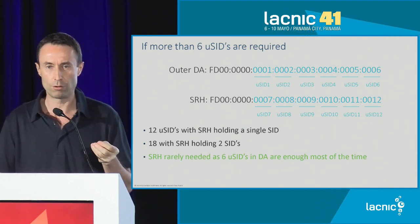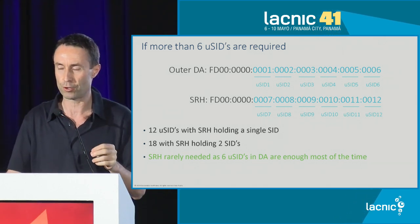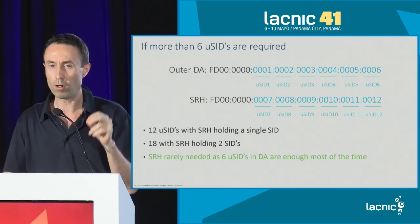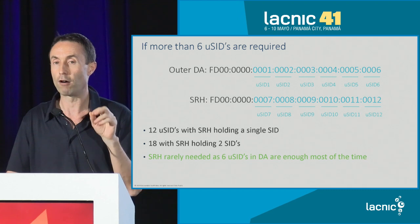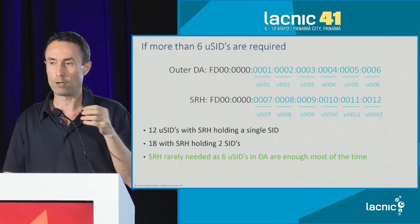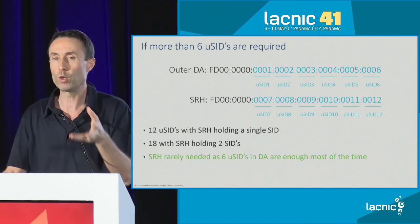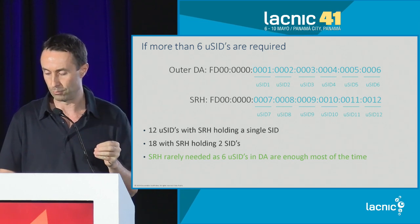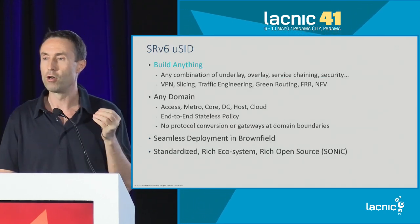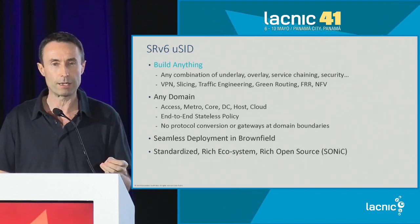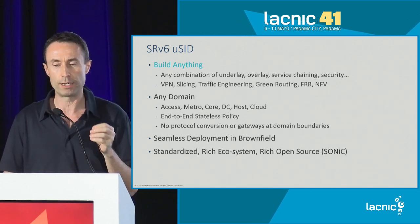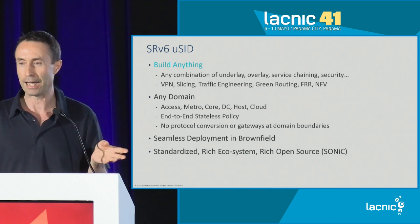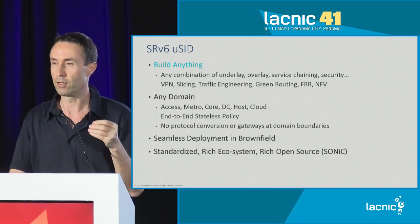What is the status of the technology? Two years ago, we demonstrated line-rate insertion of the outer destination header plus a segment routing extension header containing four 128-bit segments — a total of 30 micro instructions. This means that while today's examples don't need the SRH, if needed, the current technology already supports 30 micro instructions at line rate. SRV6 microsegments allow you to build anything — any combination of underlay, overlay, service chaining, security — in any domain: access, metro, core, data center, host, and cloud.